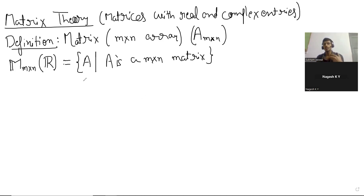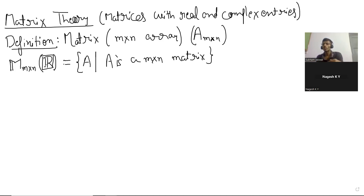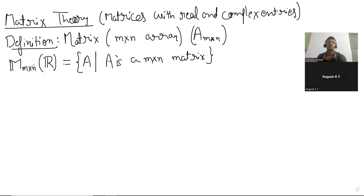Whatever I put here would be the place from where the coefficients are coming. In this case it's real numbers, but you could put complex numbers there, or if you're doing discrete mathematics, you could put integers there. For us, we will keep it very linear and just follow the chapter.